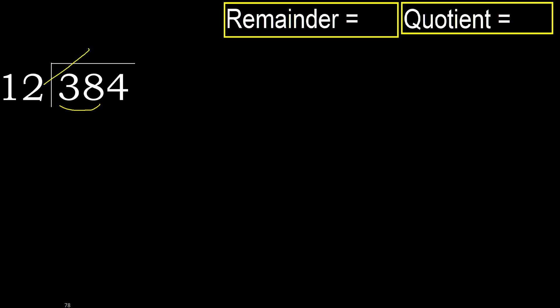12 — multiply by which number is nearest to 38 but not greater? 12 multiply by 4 gives 48, which is greater. 12 multiply by 3 gives 36, which is not greater. Subtract: 38 minus 36 is 2. Next, bring down.